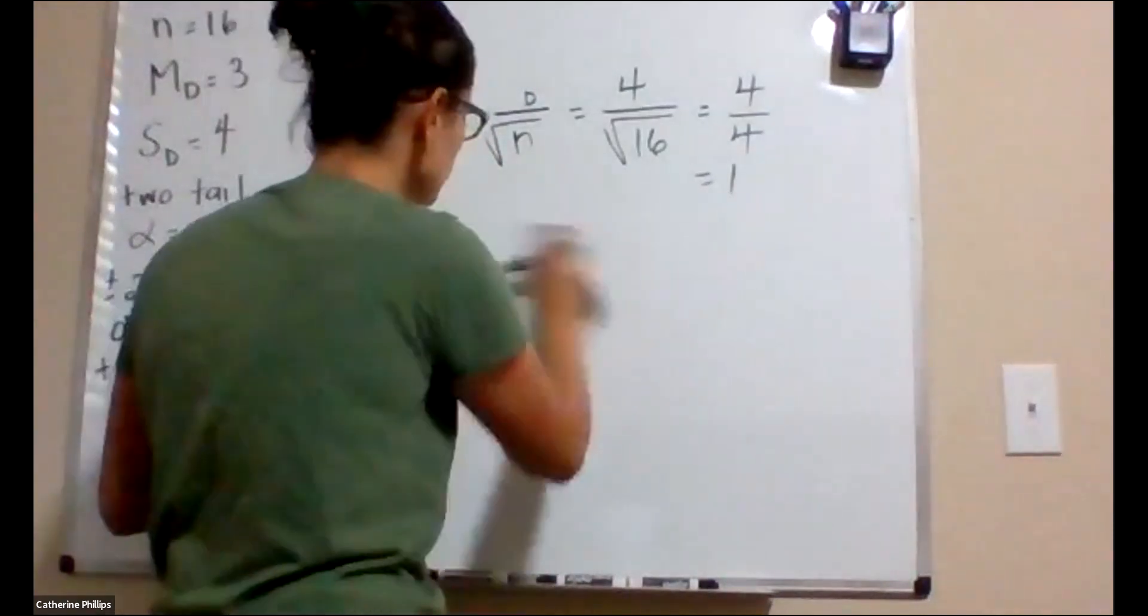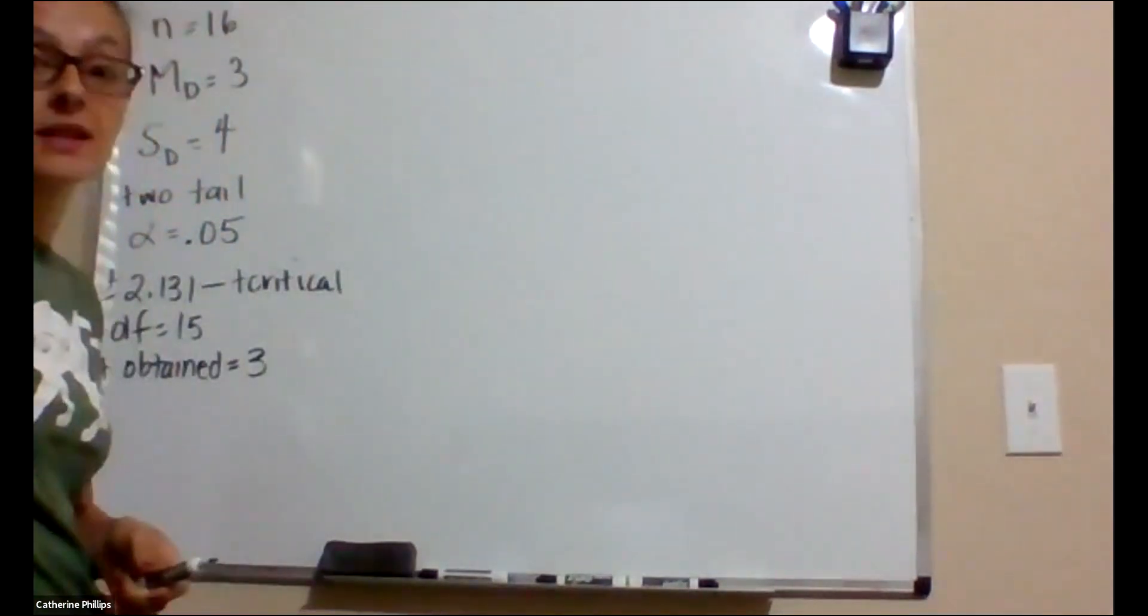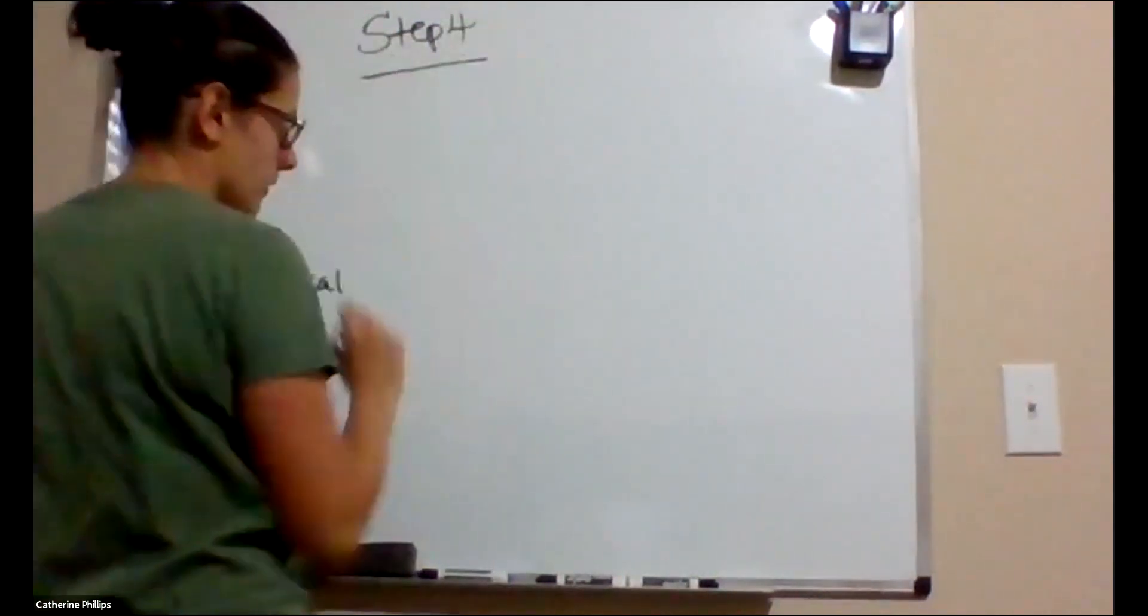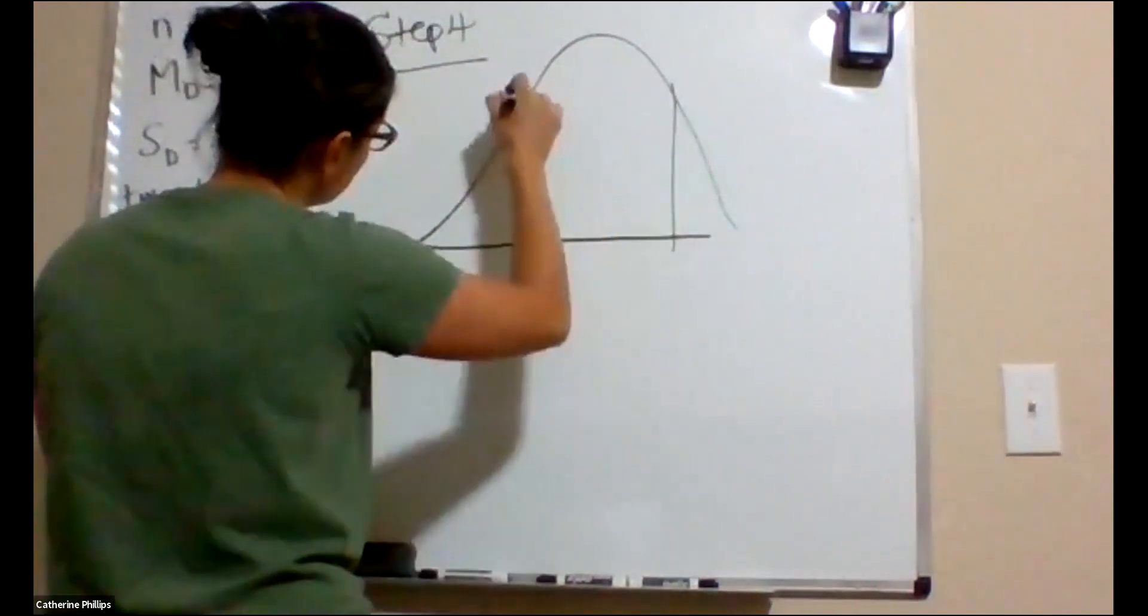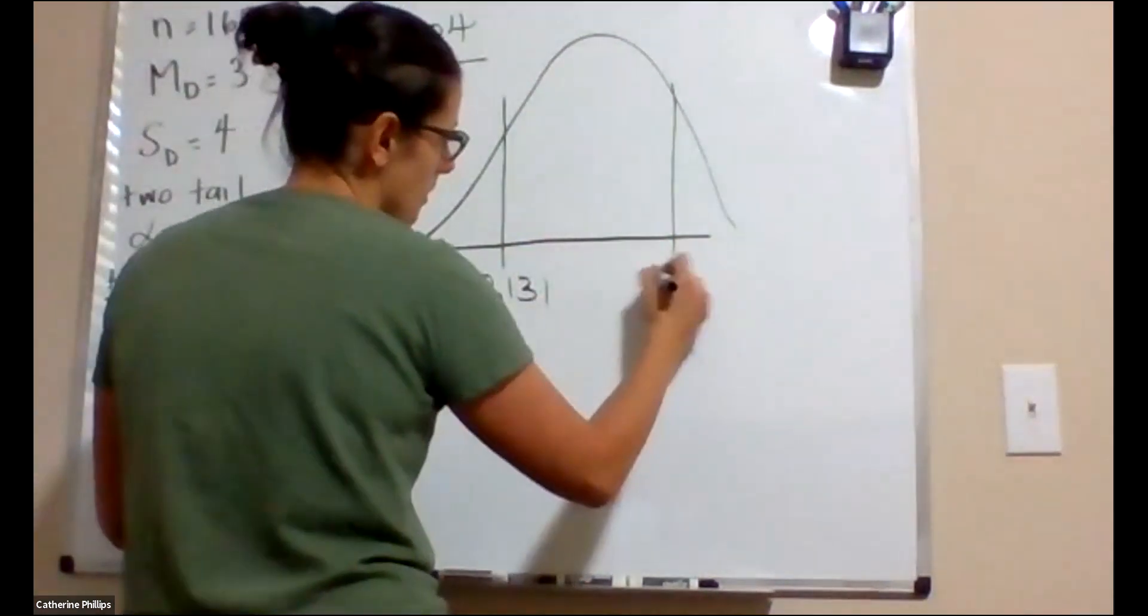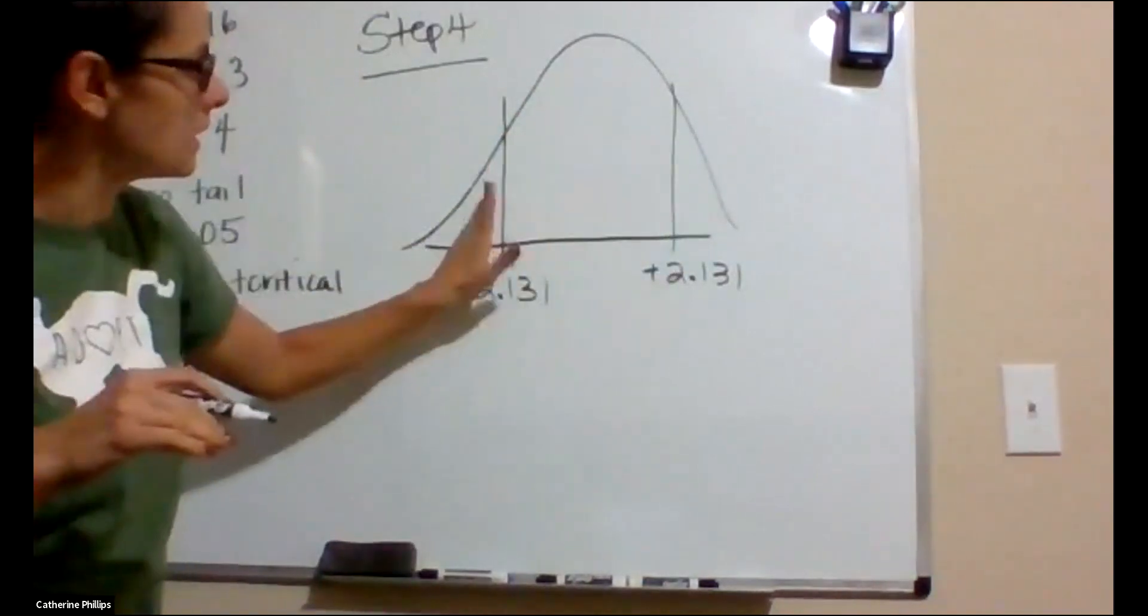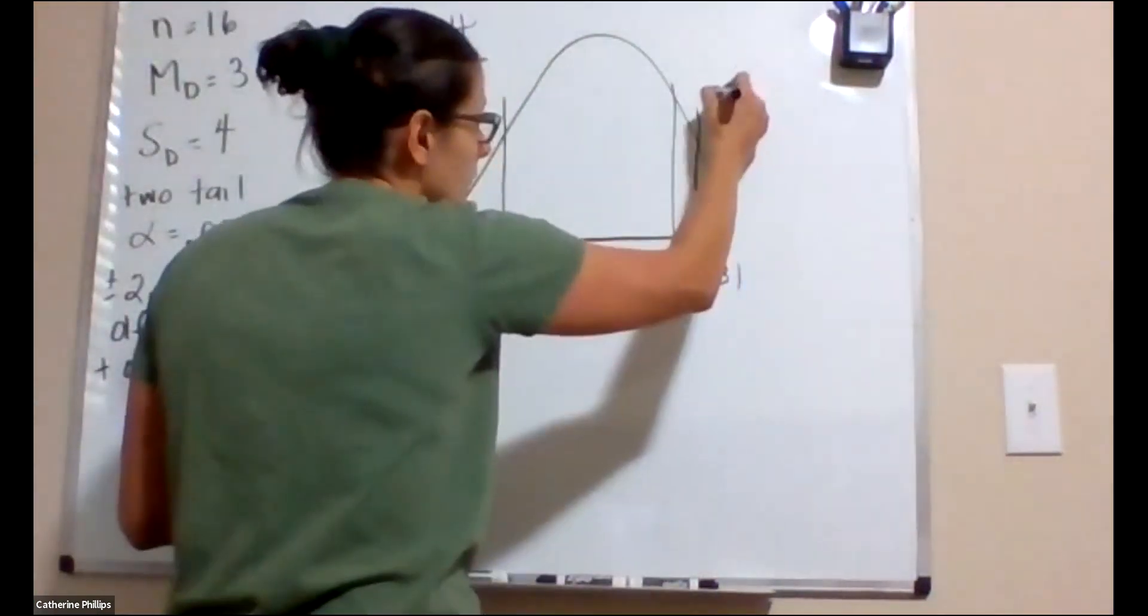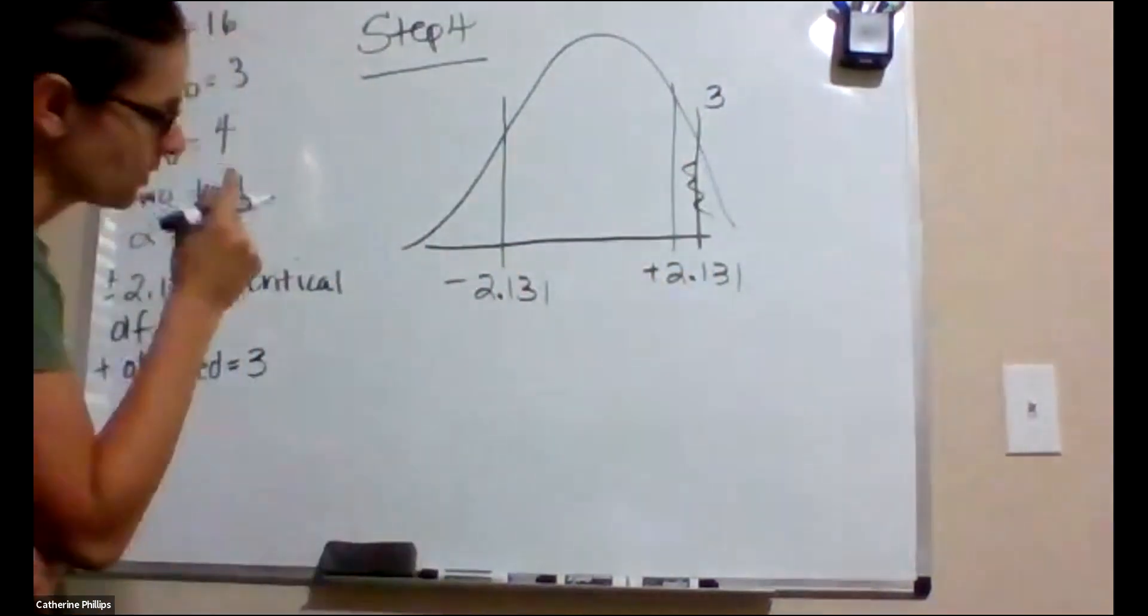Now what we need to do is we need to make a decision. Step 4. Make a decision, interpret it, provide evidence. I do highly recommend drawing, put the information on it. So negative 2.131, 2.131. Remember, anything in this middle region, fail to reject the null. Anything out in these tails, we're going to reject the null. The value we calculated in step 3 is 3. So it's in that rejection, it's in the critical region. So we're going to reject the null.